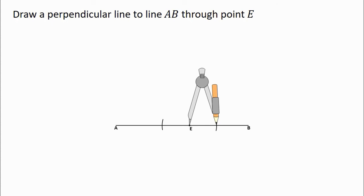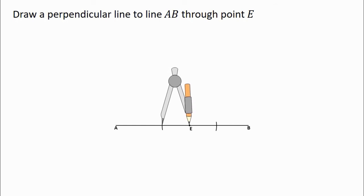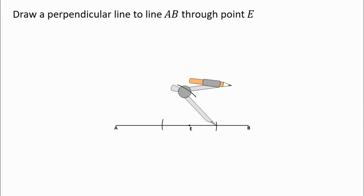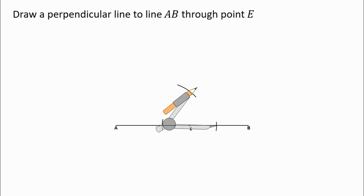After that, pick the needle of the compass from point E and place it on the point of intersection between line AB and the first arc. Stretch the compass a little bit, then construct an arc. With the same radius, move the needle to the point of intersection between line AB and the second arc — making sure you do not change the radius. Then turn the compass and construct another arc to intersect the first arc you drew.